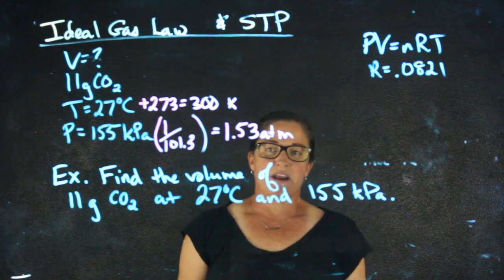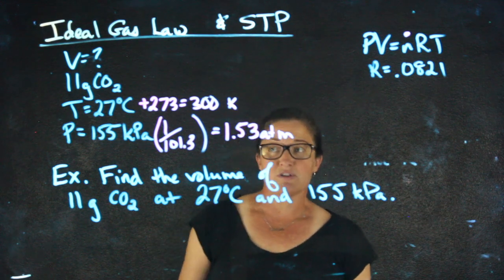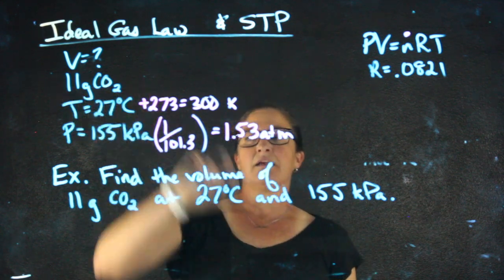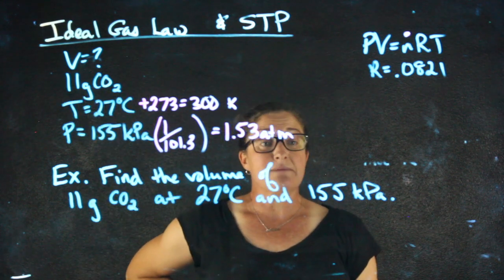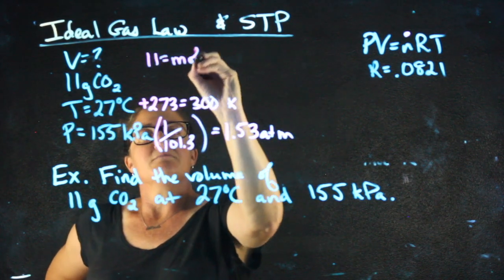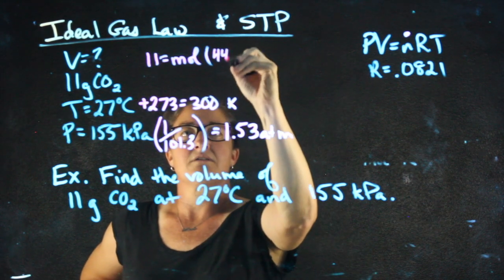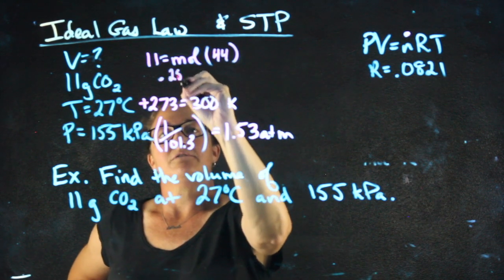So now I'm almost ready to plug into PV equals NRT, but I still need to know moles. I didn't give you moles, but I gave you enough information to get it because I gave you grams of CO2. So I can do grams equals moles times the molecular weight of CO2, which is 44, giving me 0.25 moles.